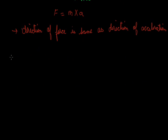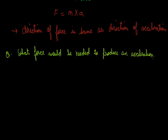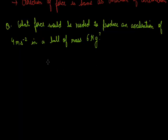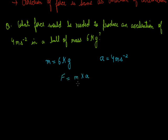Now we will discuss one numerical. In this numerical, we are directly given that there is a ball having mass M equal to 6 kg, and on applying some force we get an acceleration of 4 meter per second square. We want to find how much force is applied. We know that F is equal to M into A. We are given both quantities, so we multiply: 6 into 4 equals 24. Hence, 24 Newton of force is applied on a ball of mass 6 kg to produce an acceleration of 4 meter per second square.